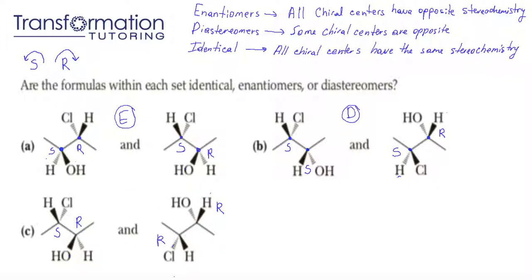Looking at these two molecules: the chiral center on the left has an S configuration, but on the right the same chiral center has an R configuration — so that switched. However, the chiral center of the OH is R on the left, and the chiral center of the OH is also R on the right, so these two stay the same. Therefore, one chiral center switched and the other stayed the same — which means these two molecules are diastereomers. They're like cousins: one chiral center switched, and another stayed the same.